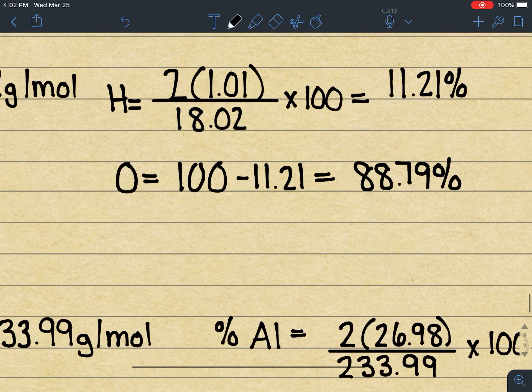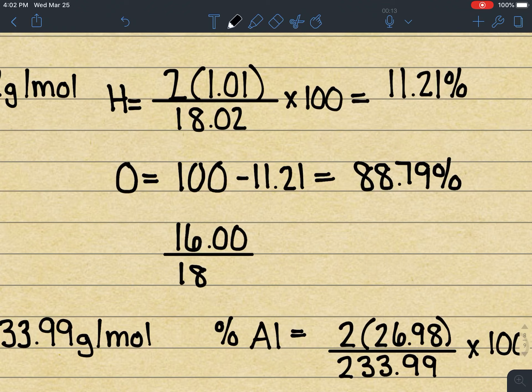The other option is to just go ahead and set this up similar to what we did with hydrogen, and that is to take 16 divided by 18.02, and then multiply that answer times 100. And that will also give us our 88.79%. So two ways to do the same thing.